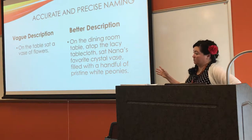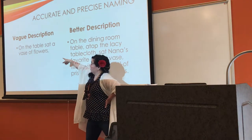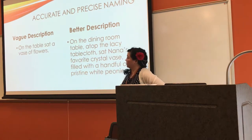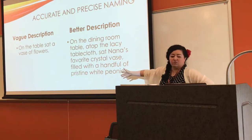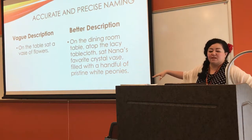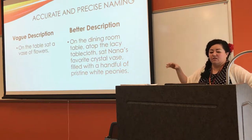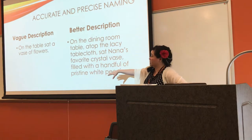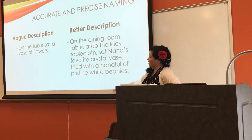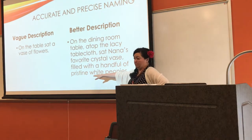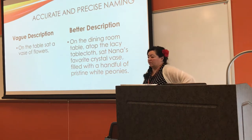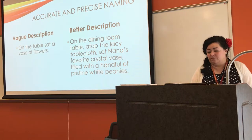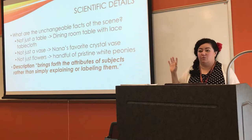Getting accurate and precise naming is really important. I was doing things like, 'On the table sat a vase of flowers,' and they'd say, 'We need more description.' What they meant was something like: 'On the dining room table, atop the lace tablecloth, sat Nana's favorite crystal vase, filled with a handful of pristine white peonies.' You can see exactly what this is. It's not just any vase — it's Nana's vase. It's not just any flowers — it's perfect white peonies. As the writer, it's our job to tell them specifically what we want you to see.